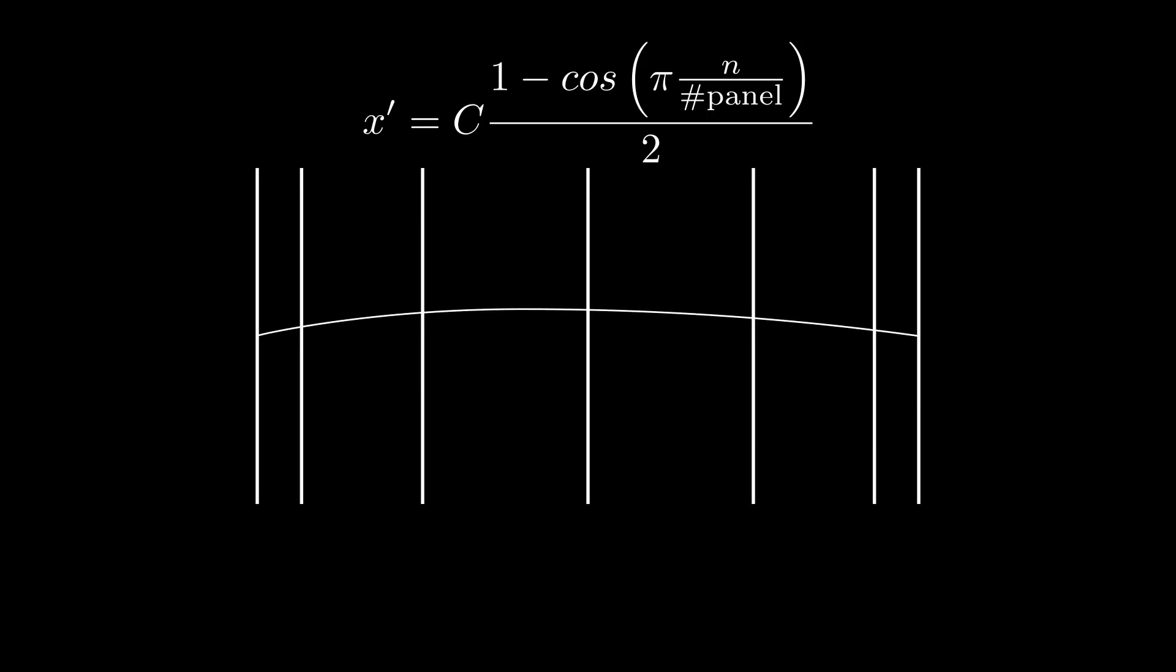Now let's say we want 6 panels. We can modify our cosine spacing equation to this and this lets us know where the discretization along the camber line is. So in red is our vortex locations and blue is our control point which we will call the co-location points.